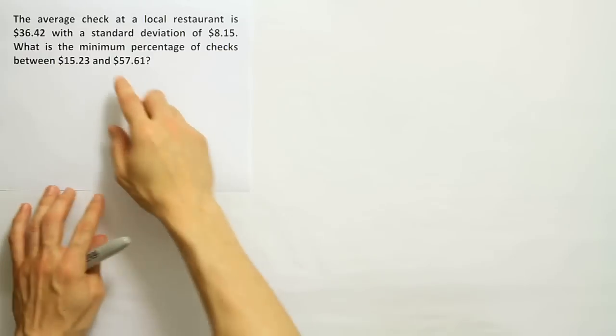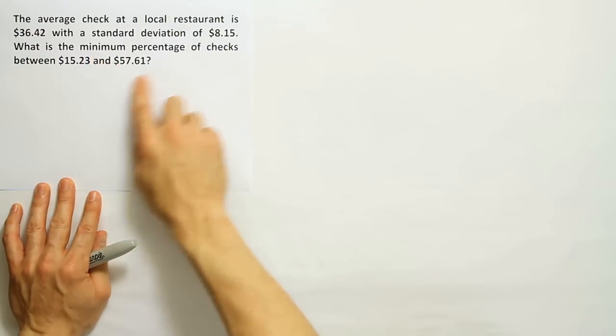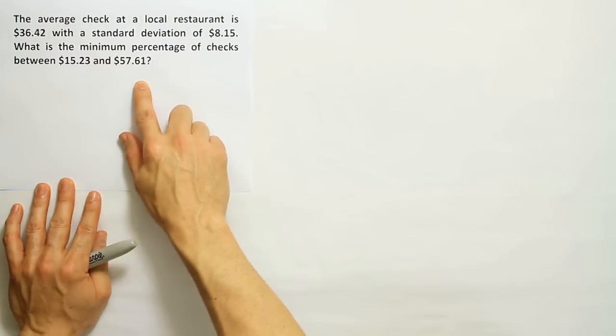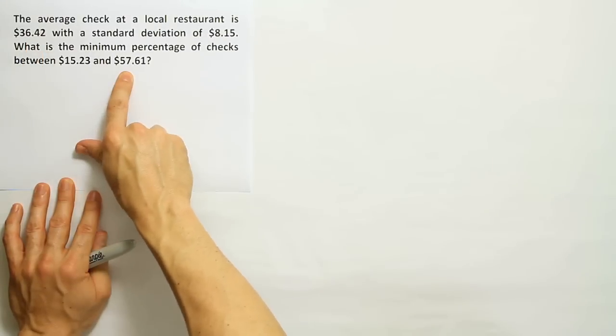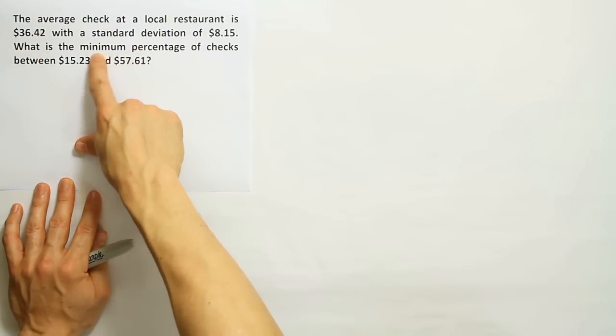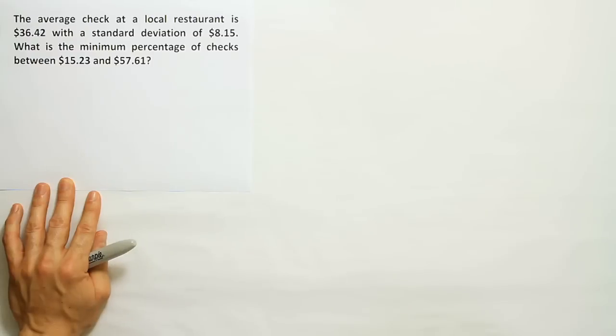A couple of things about this problem stand out to me. The first thing is this statement, the minimum percentage of checks between these two numbers. I notice that the mean is between these two numbers, and that tells me that this is a good candidate for Chebyshev's theorem.